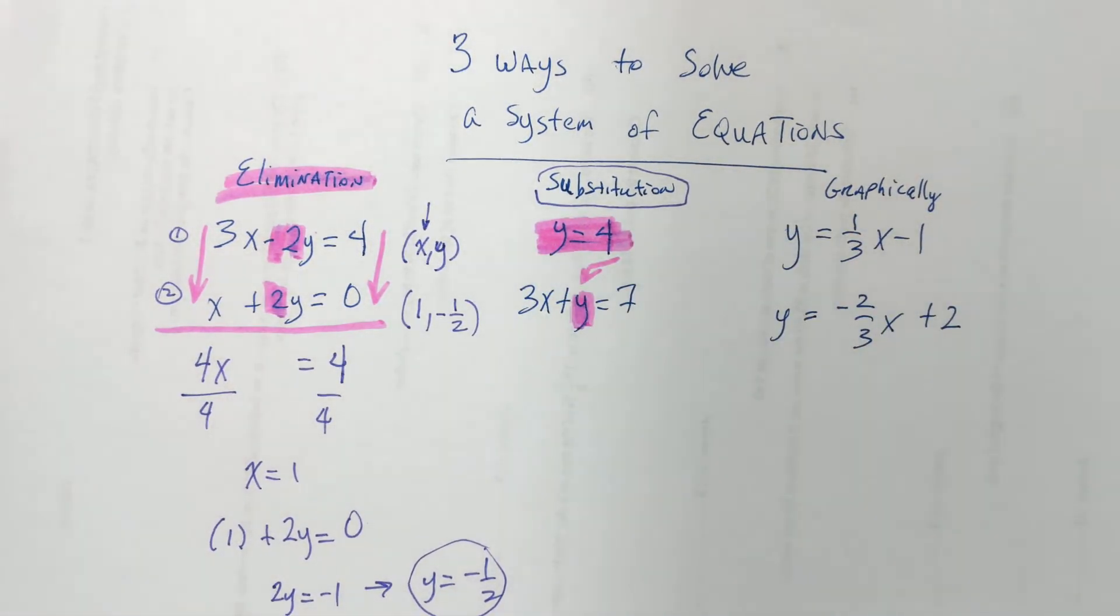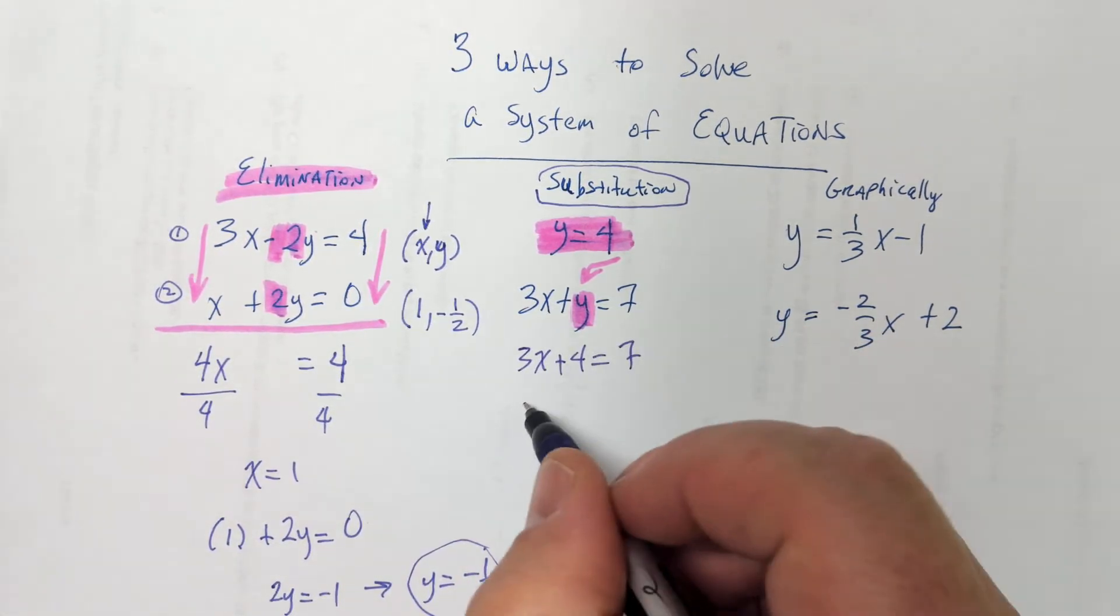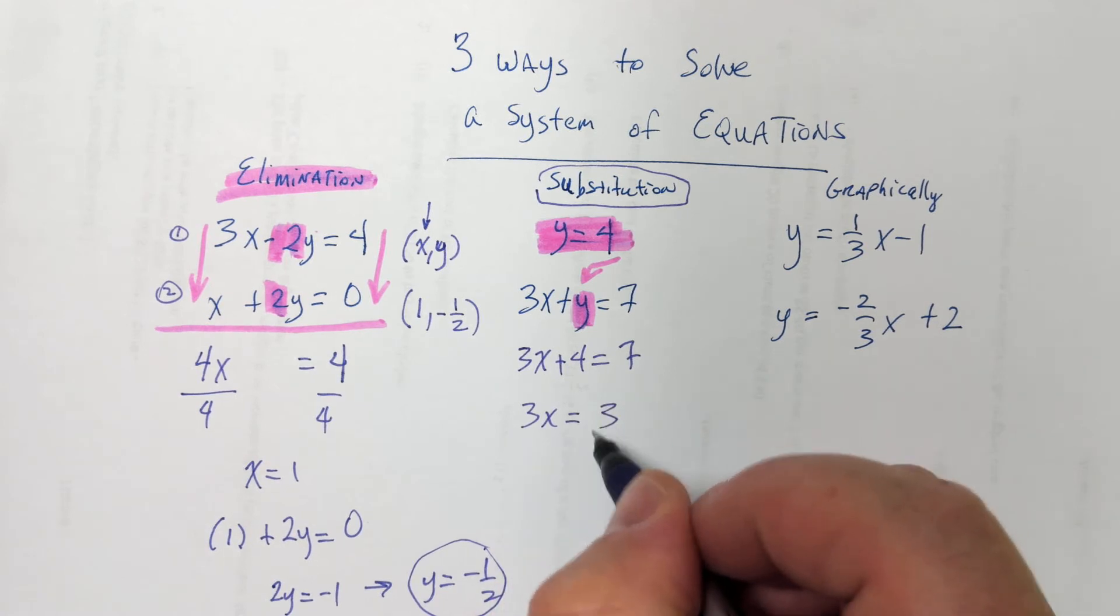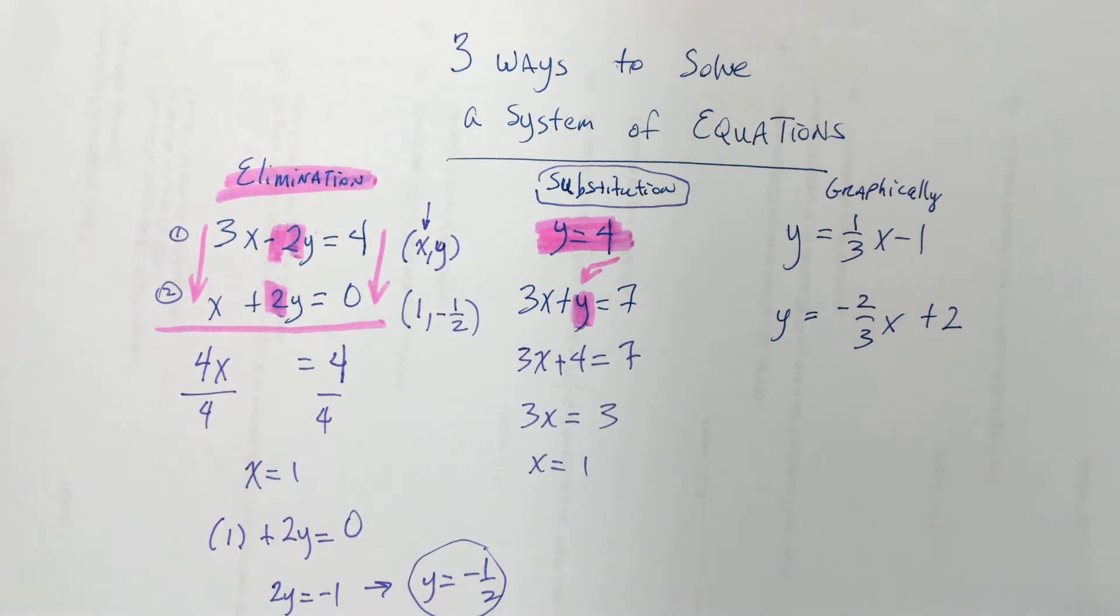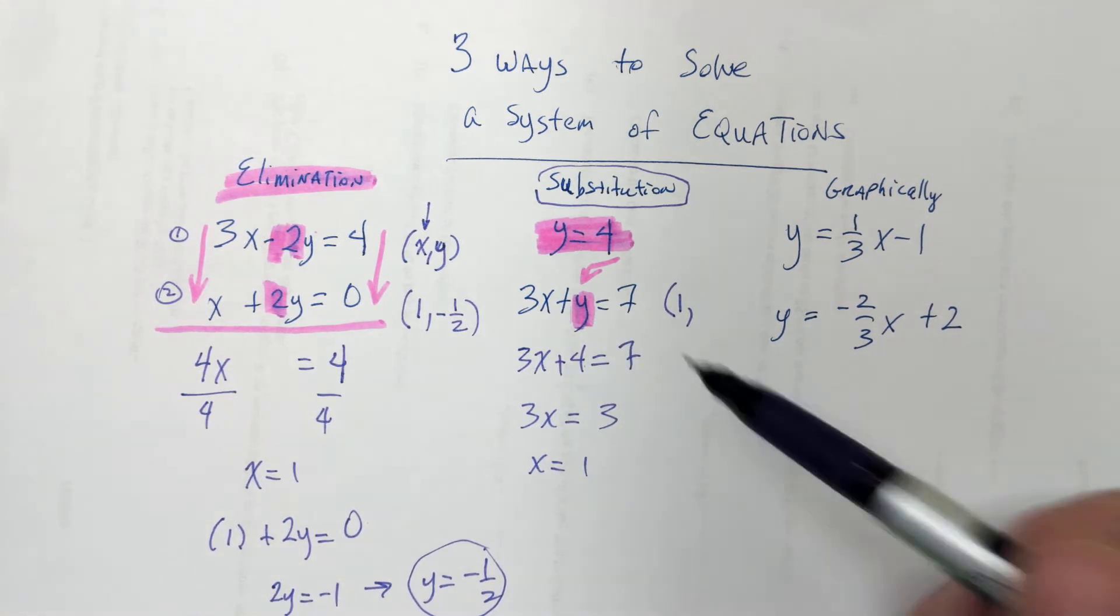So, then what we get is 3x plus 4 equals 7. So, 3x would be 3 and x would be 1. So, that's the first part of our answer is 1. Now, I don't want to give you the false impression that we always find x first. It doesn't matter. Sometimes you find y first. It just depends on how the problem is set up. All right. So, then we just got to plug that in. Either place. Doesn't matter.